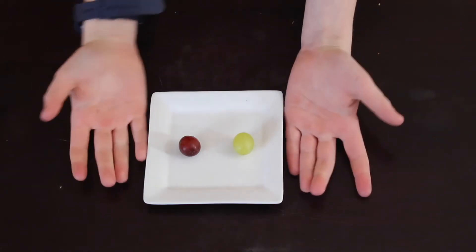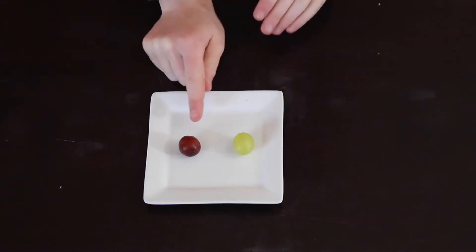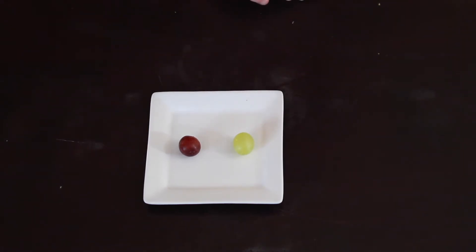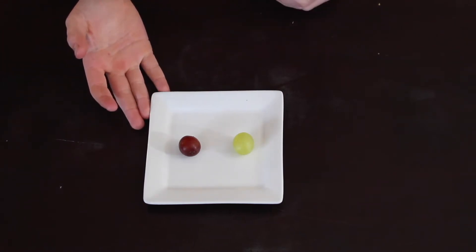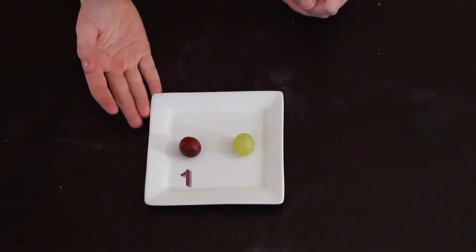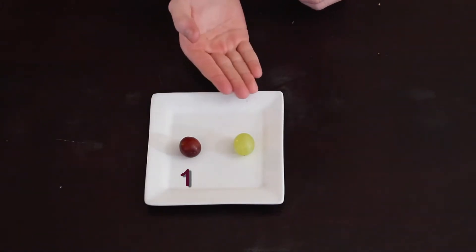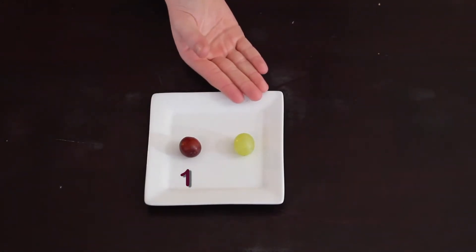Let's review. Here we have two grapes, a purple grape and a green grape. The purple grape is representing a dot and is equivalent to 1. The green grape is an anti-dot and is equivalent to negative 1.